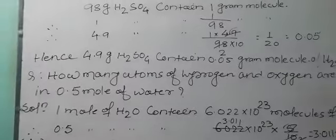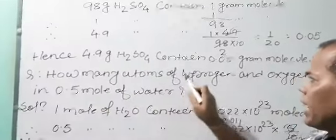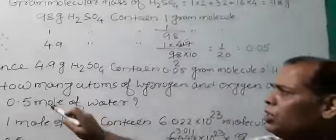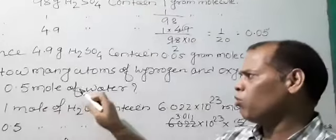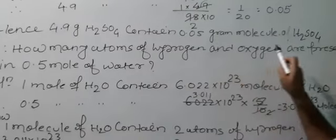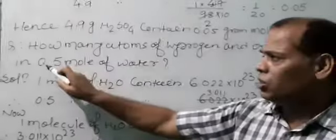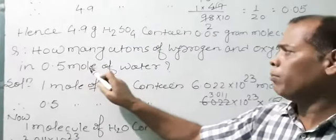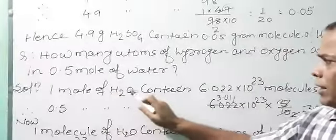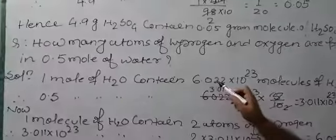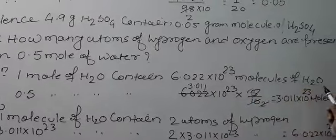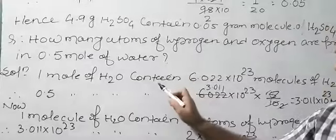Next question: how many atoms of hydrogen and oxygen are present in 0.5 mole of water? Now, 1 mole of water contains 6.022 × 10²³ molecules of water.